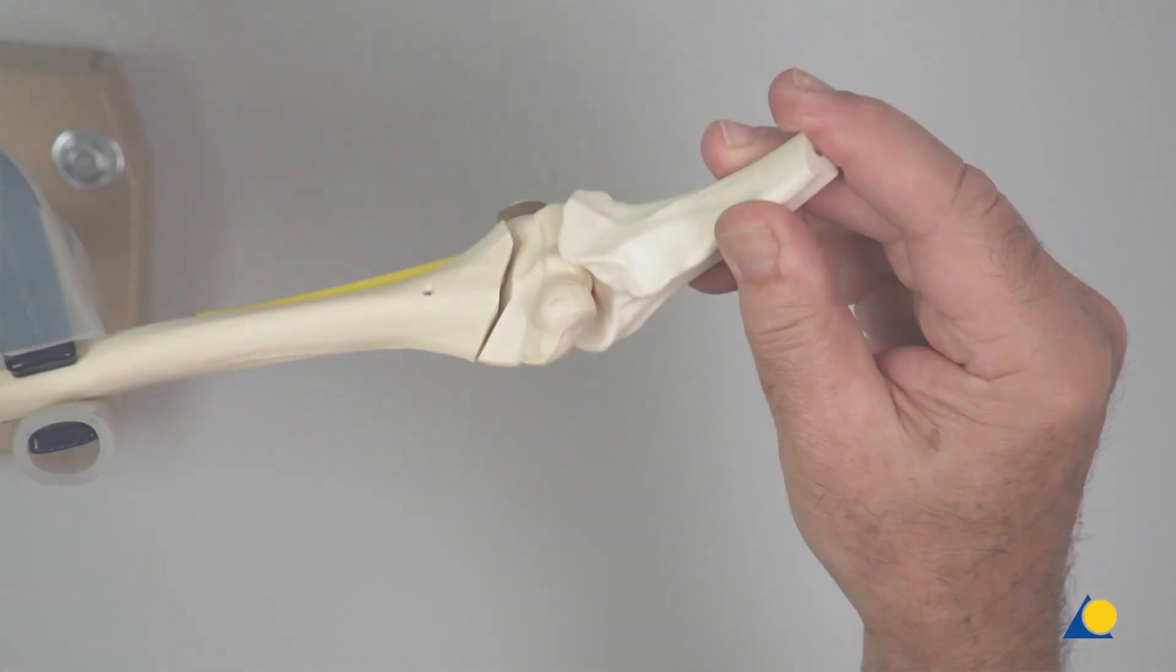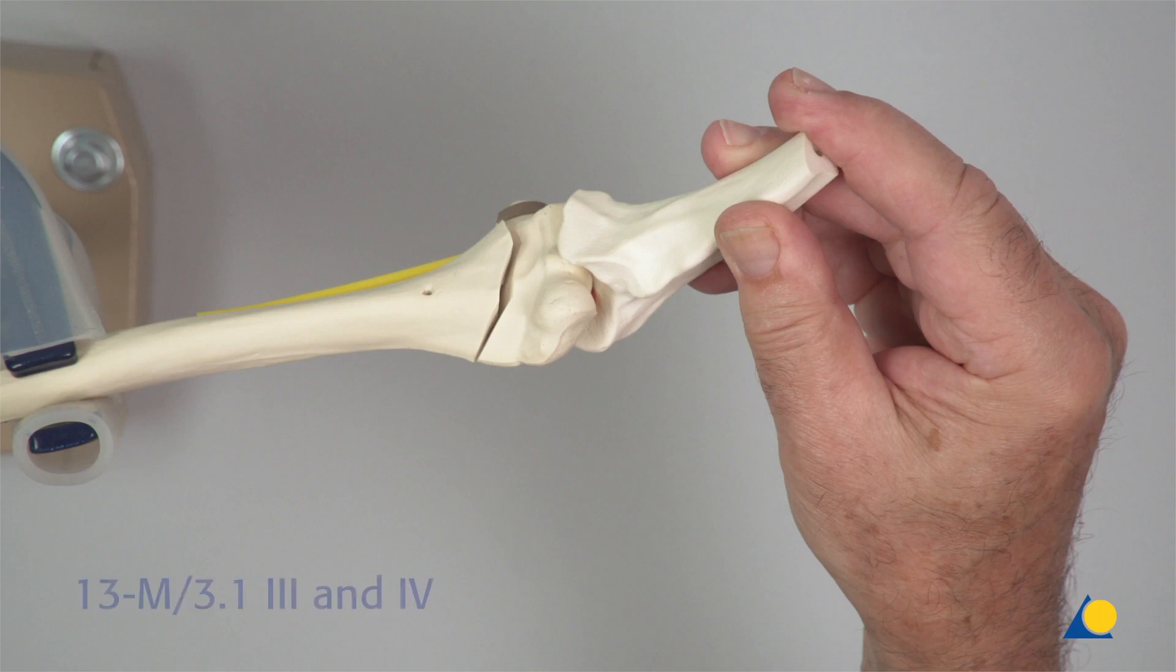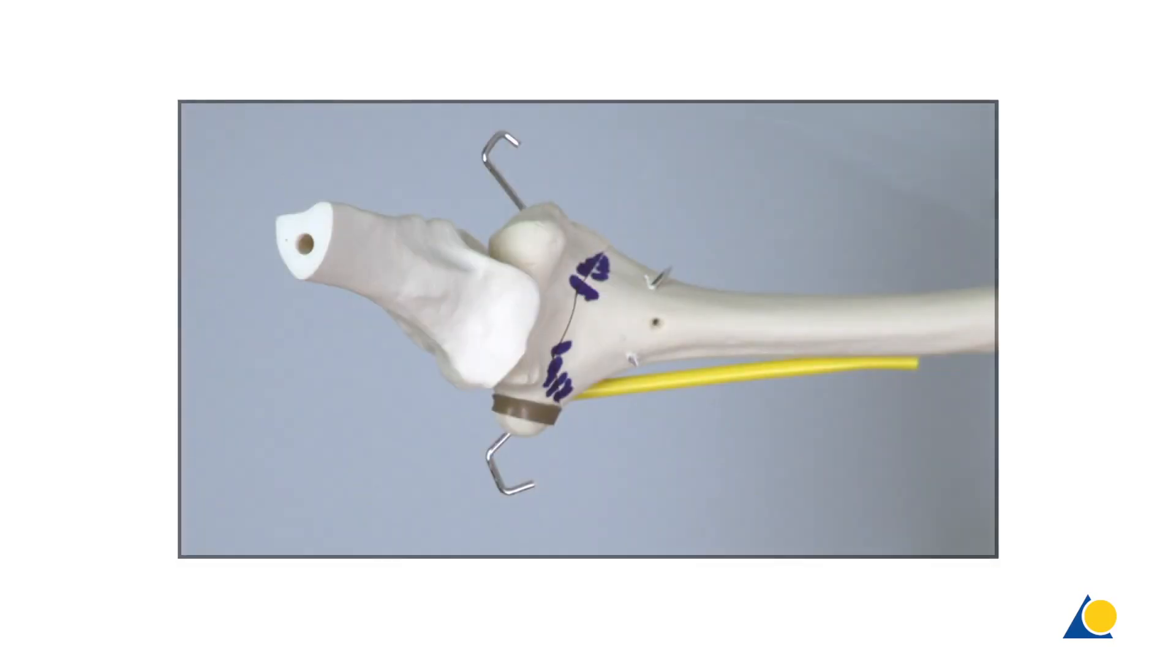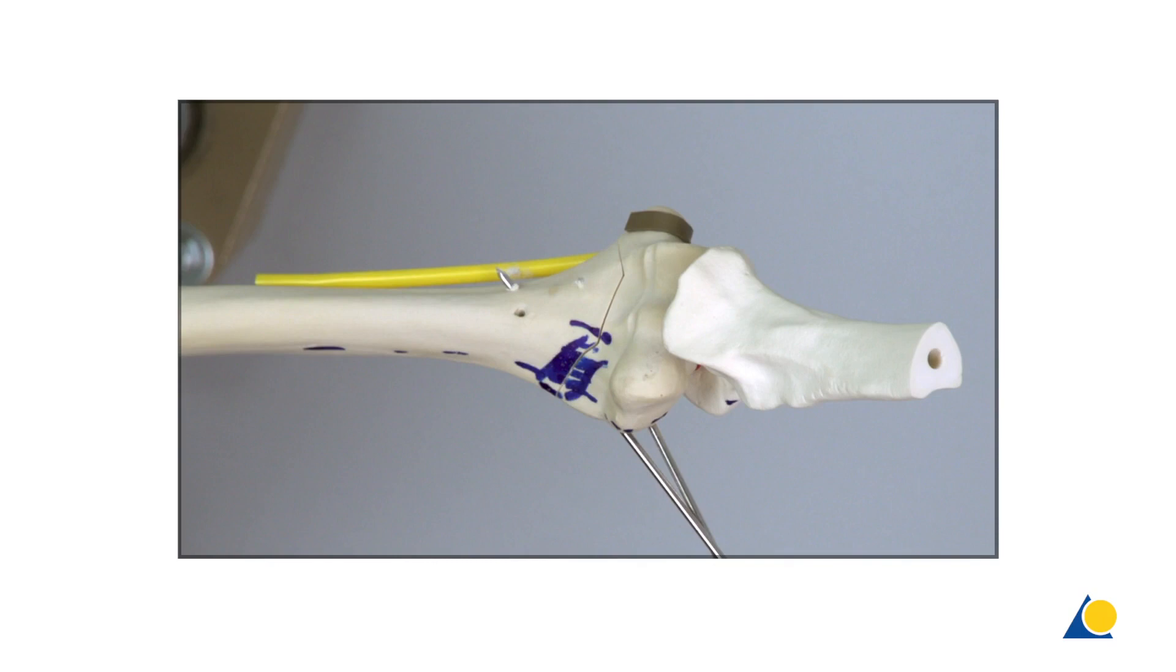In this presentation, K-Wires will be used to demonstrate two fixation techniques for an oblique supracondylar fracture of the distal humerus, AO Classification 1-3-M-3-1, 3 and 4. The techniques are the crossed bilateral 1.6 mm K-Wire fixation technique and the divergent radial 2 mm K-Wire technique.